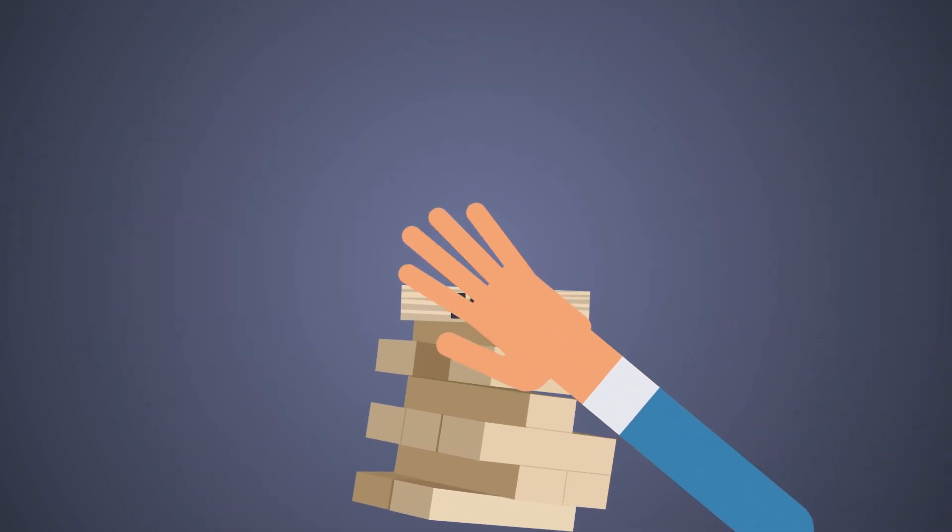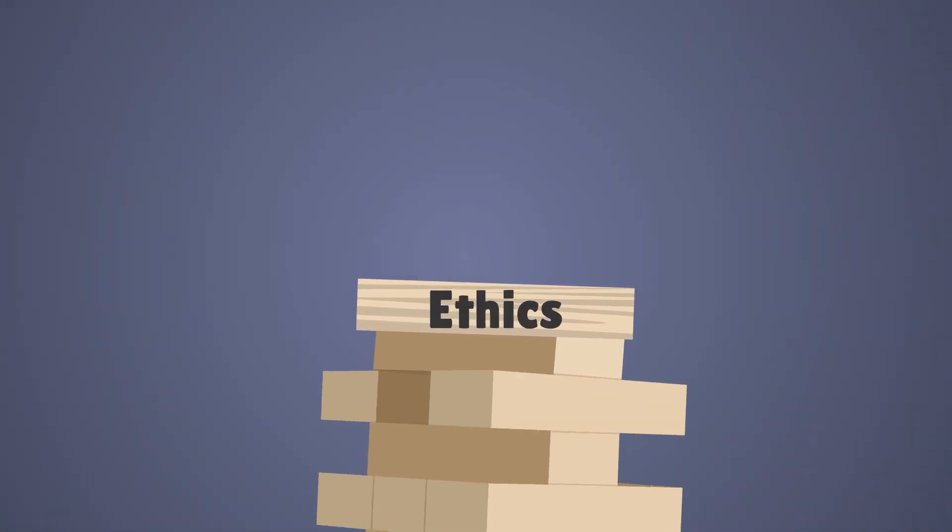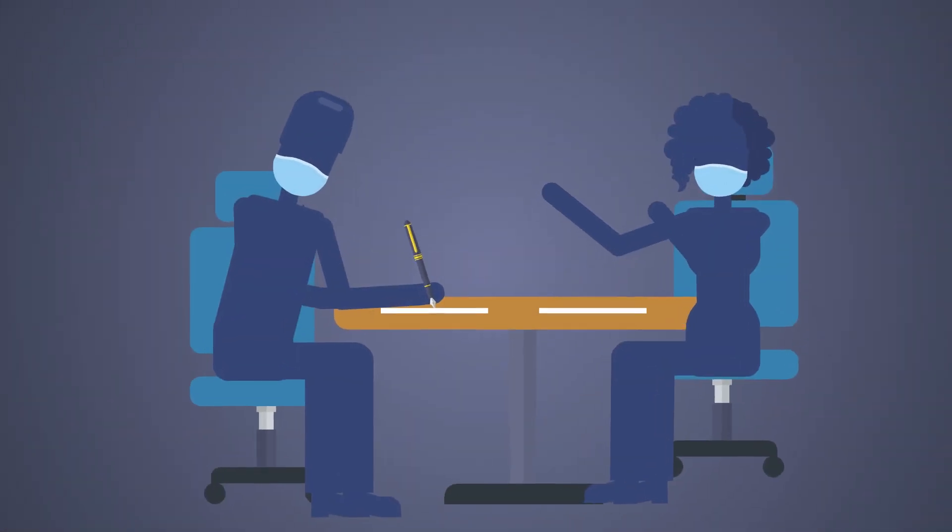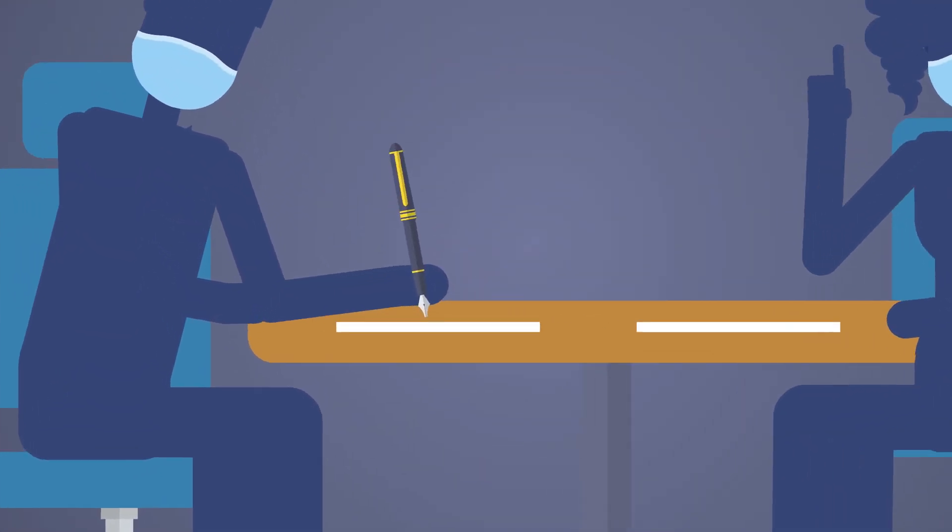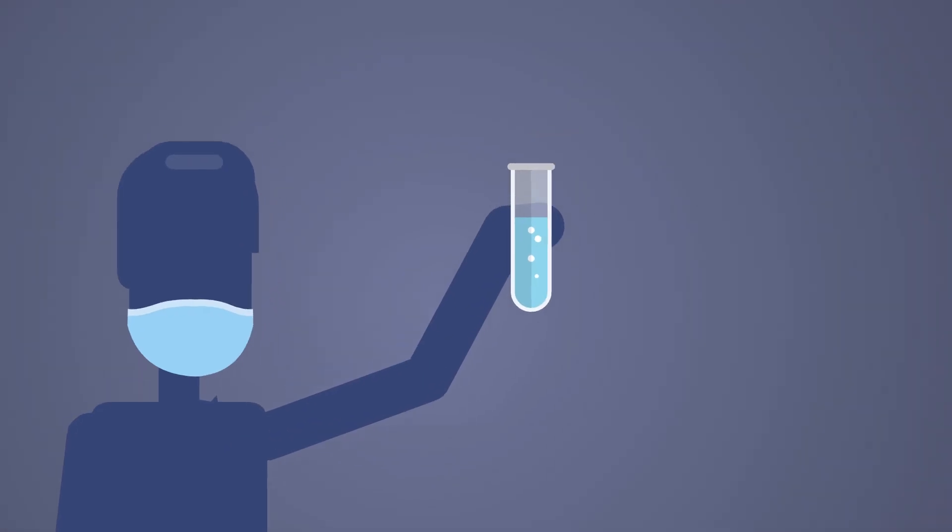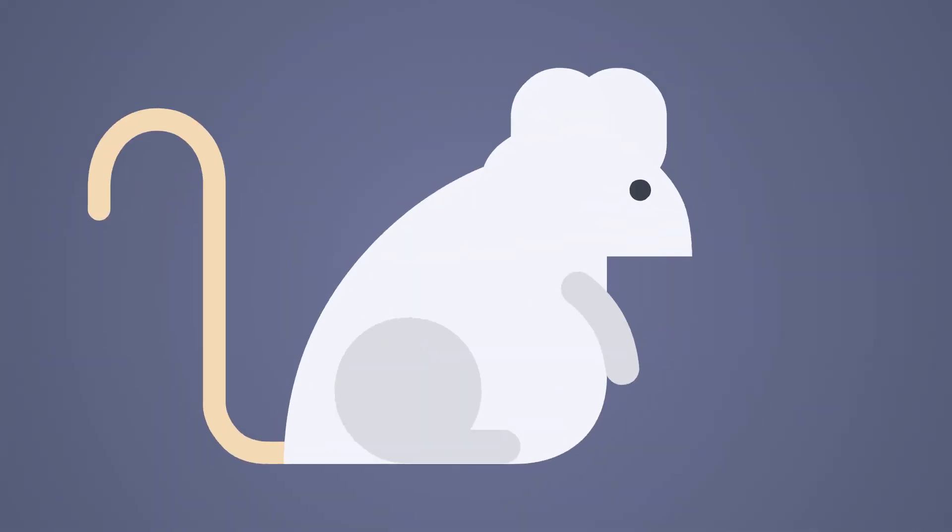So today ethics in research refers to a set of globally applicable principles that govern the way any research involving interactions between researchers and participants is designed, managed and conducted. This includes living animals or humans as well as their associated tissue and data.